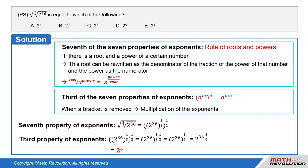That becomes 2 to the power of 36 whole to the power of 1/6, which is 2 to the power of 36 times 1/6, that is equal to 2 to the power of 6.